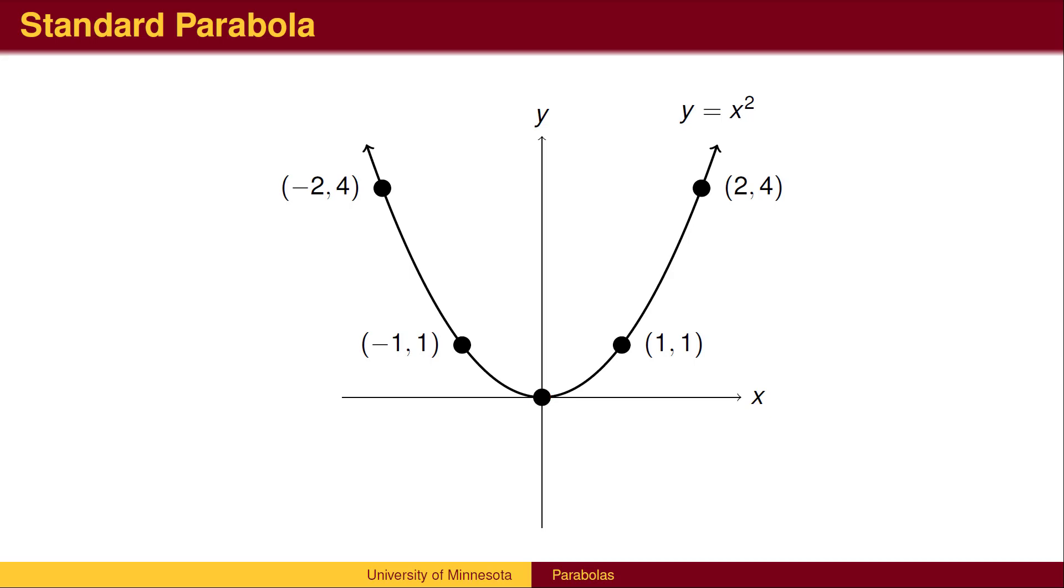To find other points on the parabola, we go over 1, up 1, and over 2, up 4.